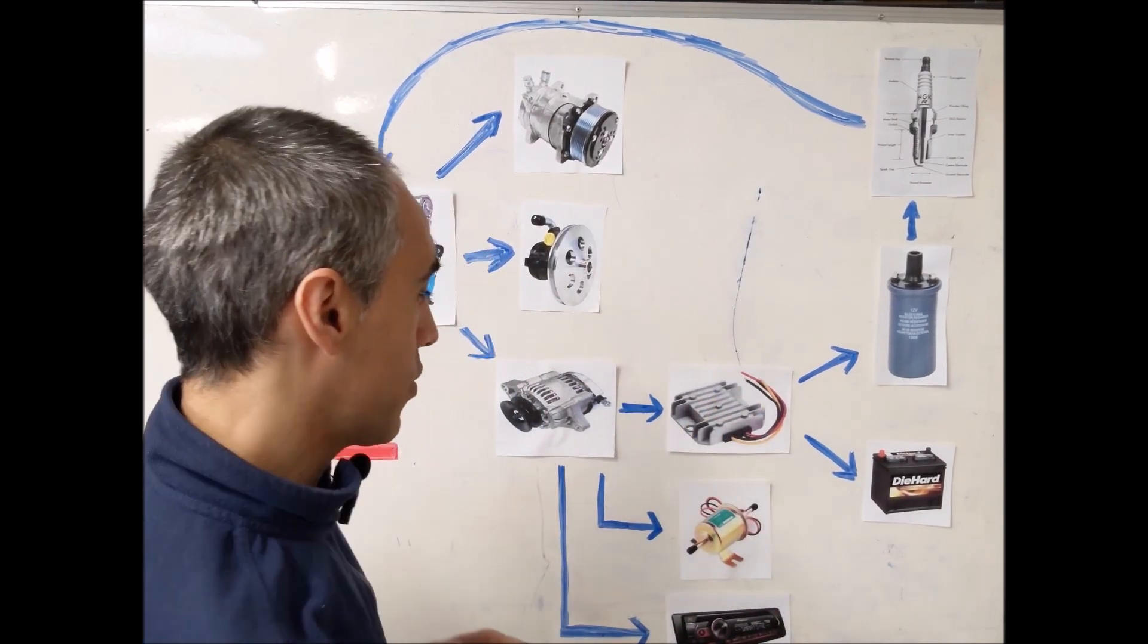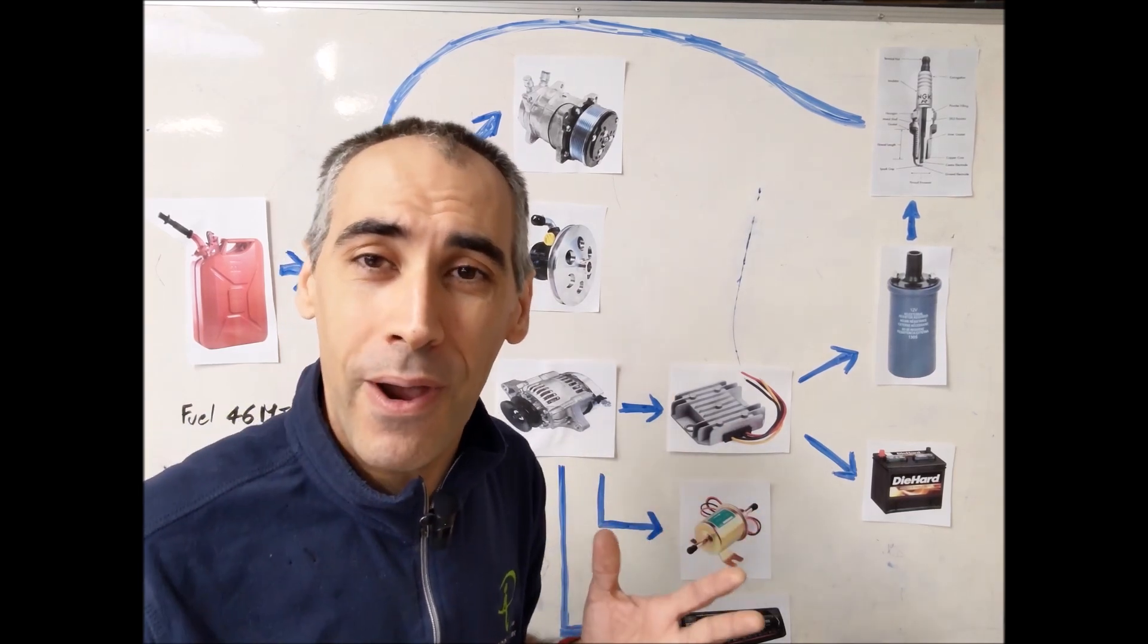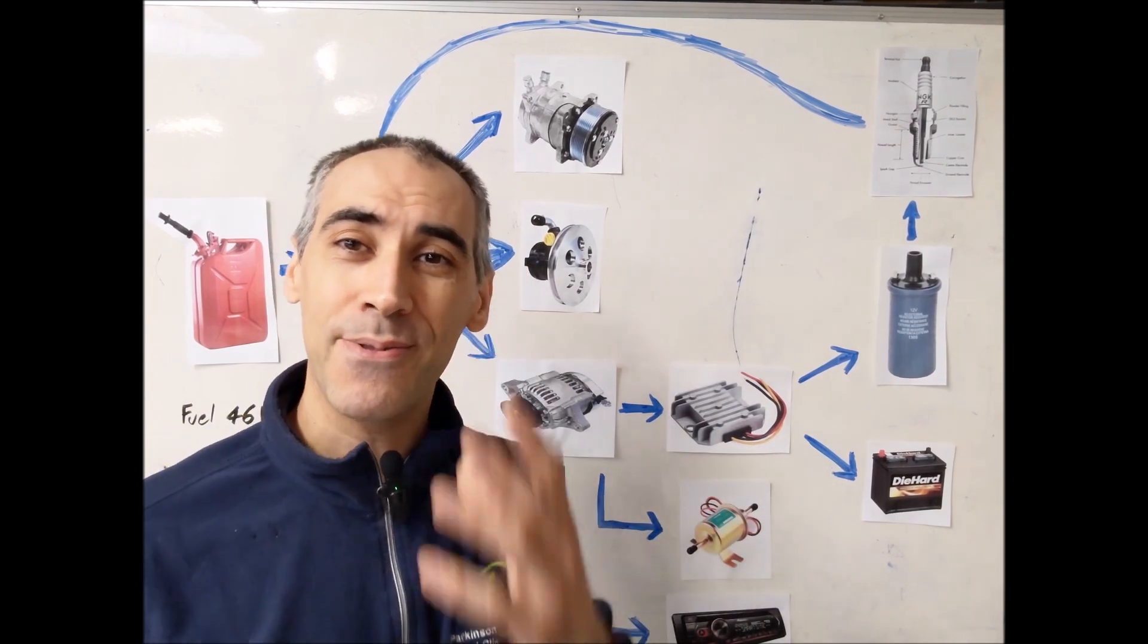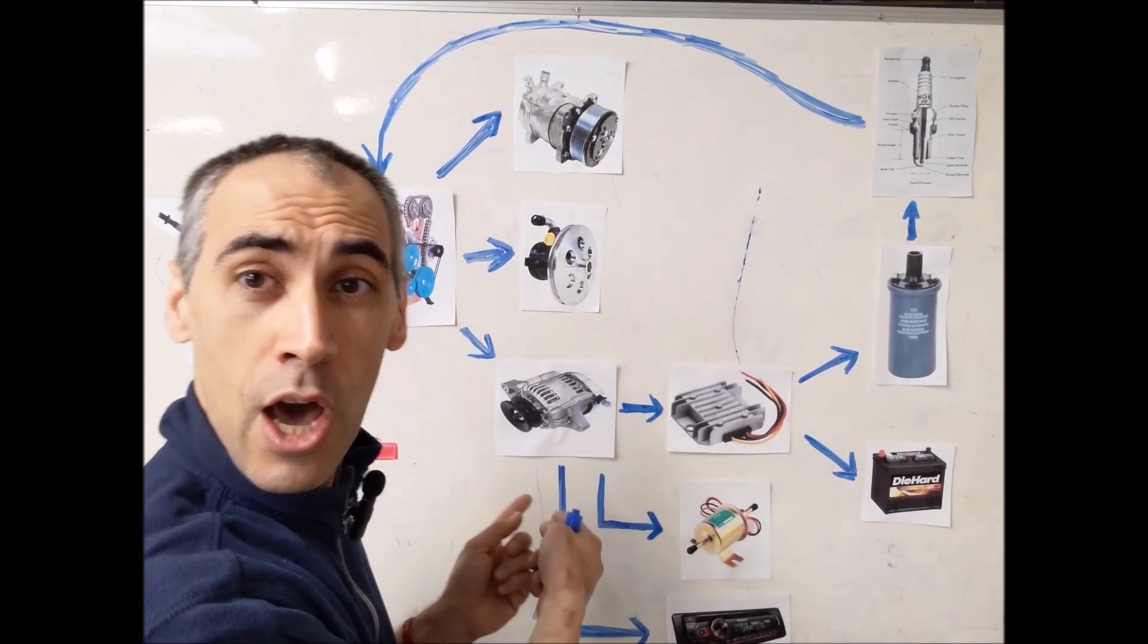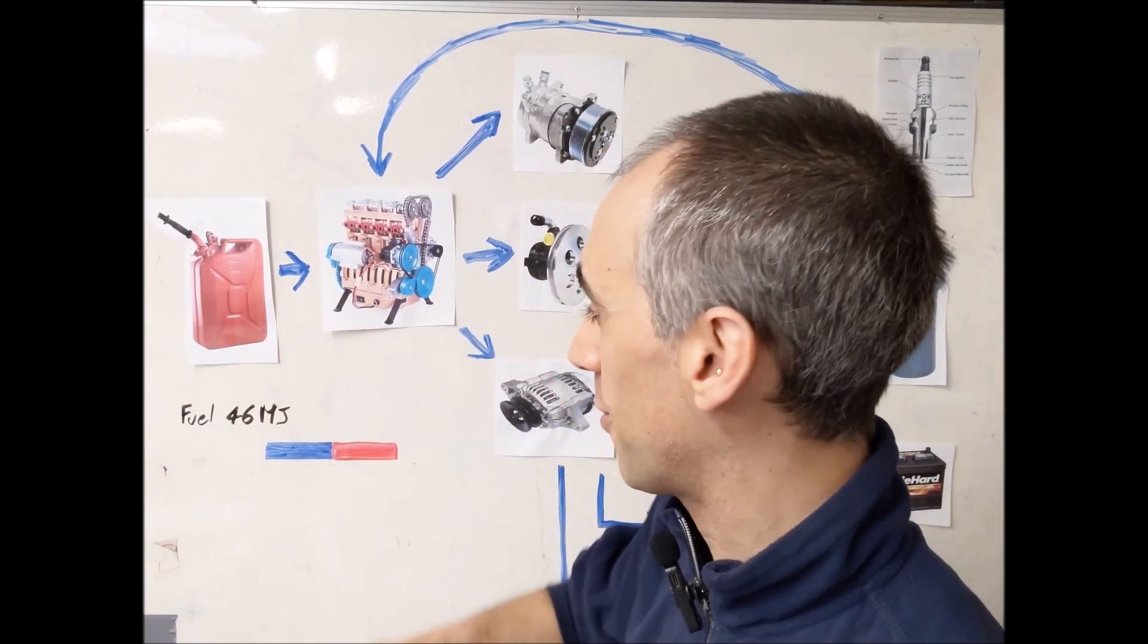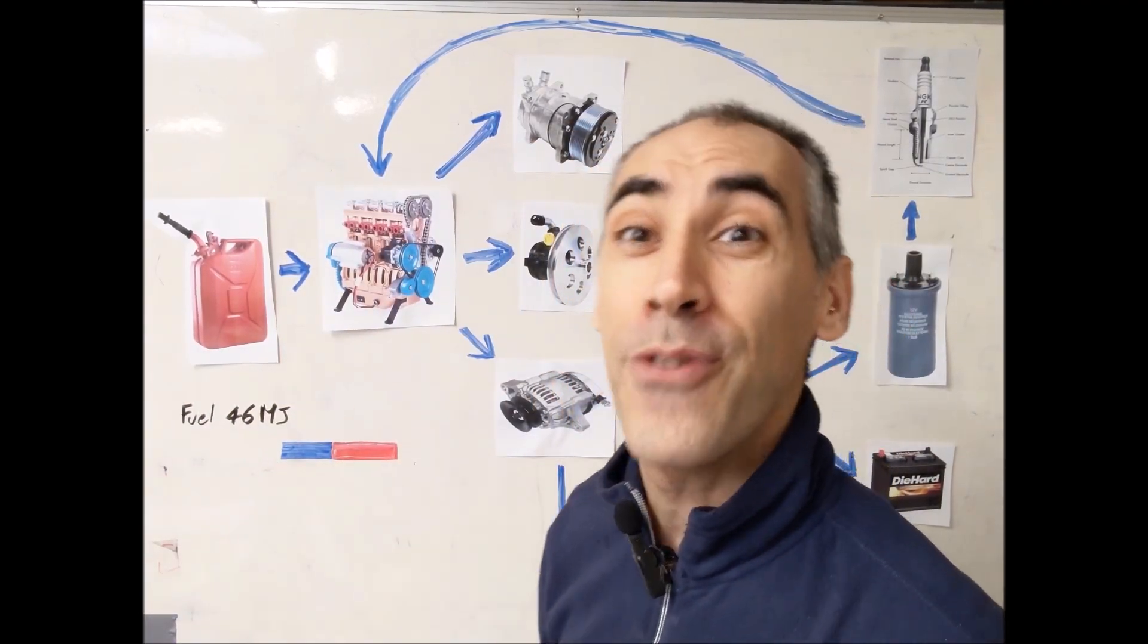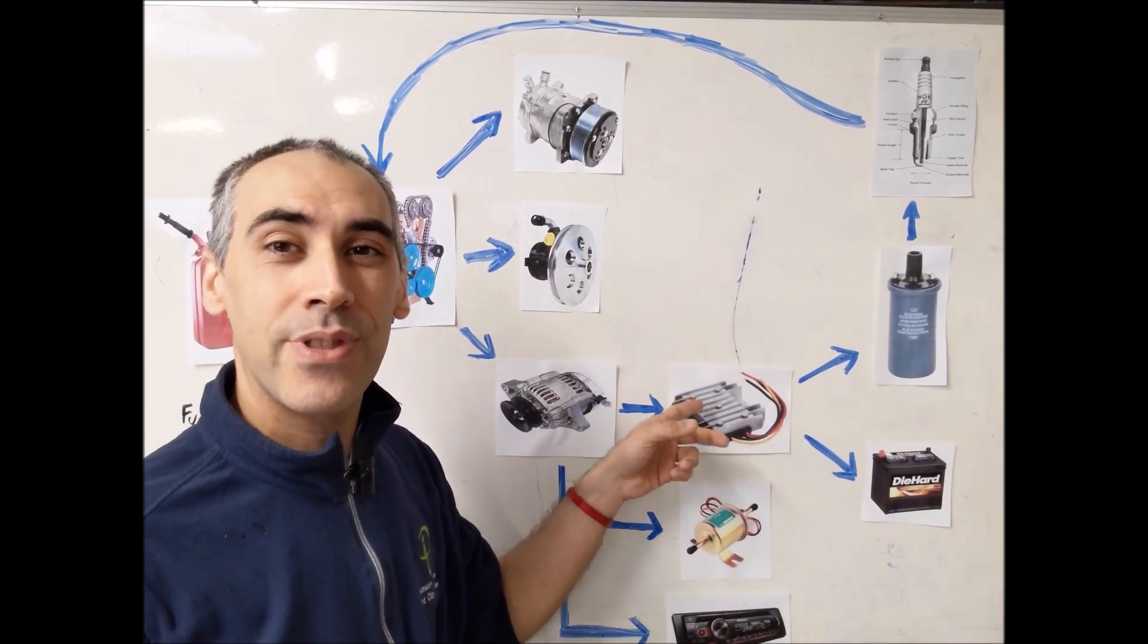From the alternator we need to run a fuel pump, otherwise you're not going anywhere. The fuel pump, guess what, it's electric. So it's another load on top of the load on top of the load. In order to run the fuel pump, you consume fuel.